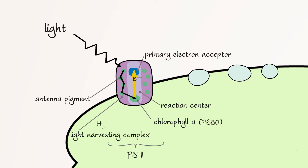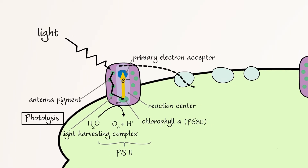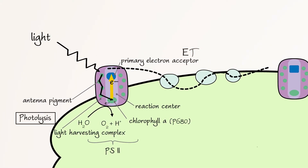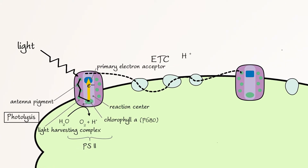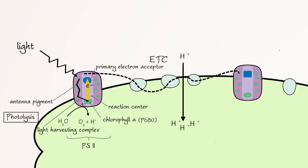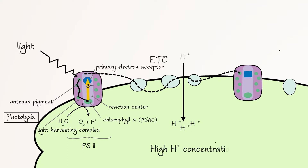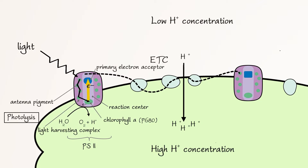To replace the electron, water is split in a process known as photolysis. Photolysis releases electrons that are transferred to the special chlorophyll A molecules, oxygen molecules as a byproduct of photosynthesis, and protons. The excited electron in the primary electron acceptor travels down the electron transport chain. This process releases energy that is used to pump protons from the stroma into the thylakoid space, resulting in a high concentration of H+ in the thylakoid space and a low concentration of H+ in the stroma.